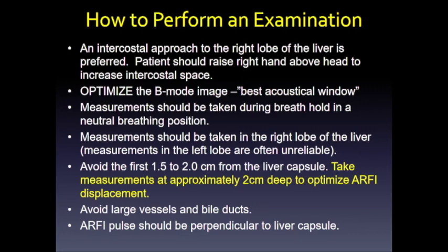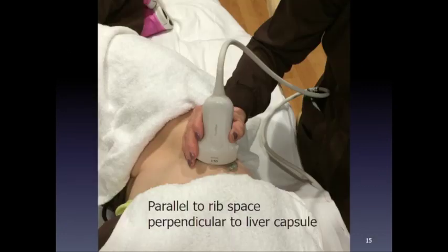Always avoid large blood vessels and bile ducts, as their sharp borders cause refraction of shear waves and interference patterns, giving inaccurate measurements. Research also shows that the transducer should be perpendicular to the liver capsule in both planes — angling the probe causes significant refraction of energy, producing weaker displacements and much more error in measurements, even with small amounts of angulation. Position the transducer parallel to the rib space and perpendicular to the liver capsule.